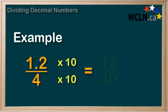So 1.2 times 10 is 12, and 4 times 10 is 40. We've rewritten our division as 12 over 40, or 12 divided by 40. Same question, but no more decimals.